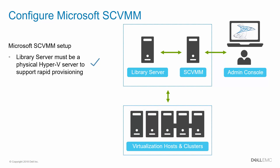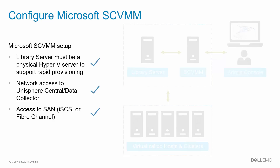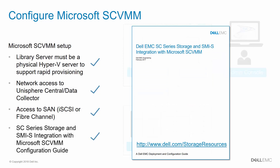When setting up the environment, the Library server component of SCVMM must be installed on a physical Hyper-V host if you want to be able to create SAN copy-capable templates for rapid provisioning. Network access between SCVMM and Unisphere Central or the Data Collector is required, and SCVMM and the managed hosts and clusters must be able to access your SC array with either iSCSI or Fiber Channel. For more information on how to set up your environment, refer to the Deployment and Configuration Guide at the address shown here.